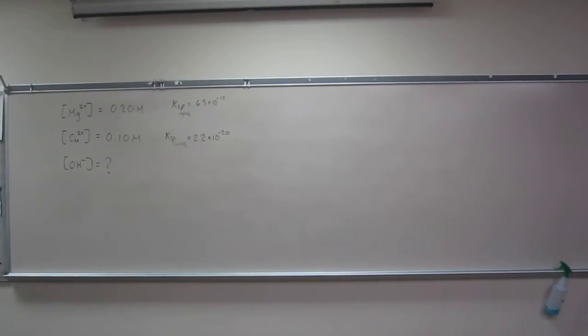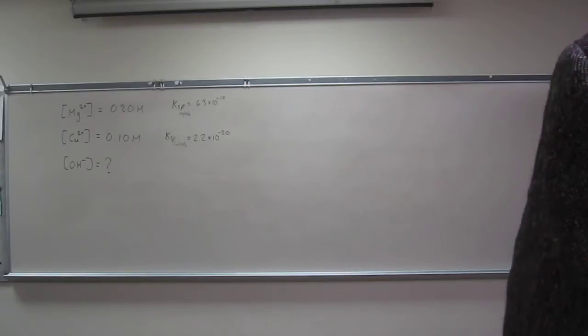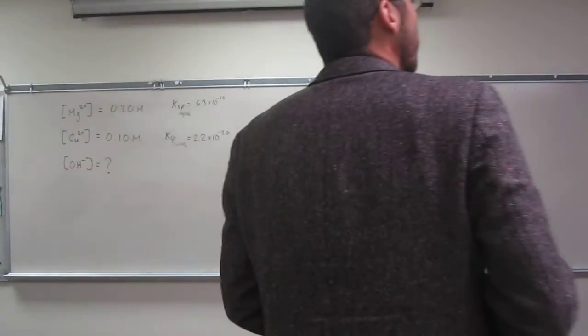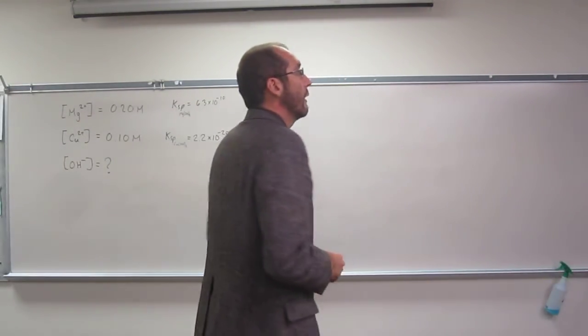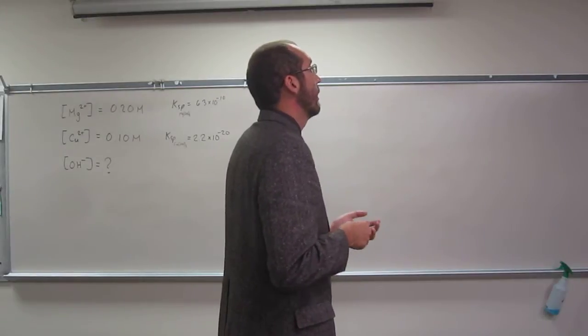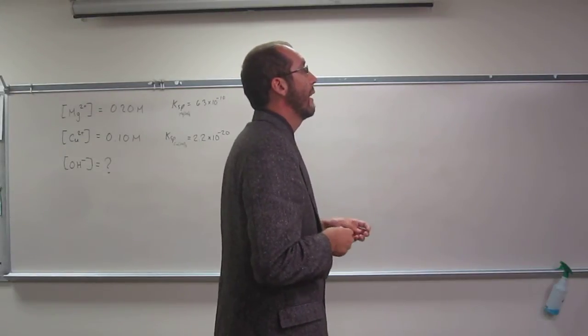This problem states the solution consists of 0.2 molar magnesium chloride and 0.1 molar copper(II) chloride. Calculate the hydroxide ion concentration that would separate the metal ions as their hydroxides.